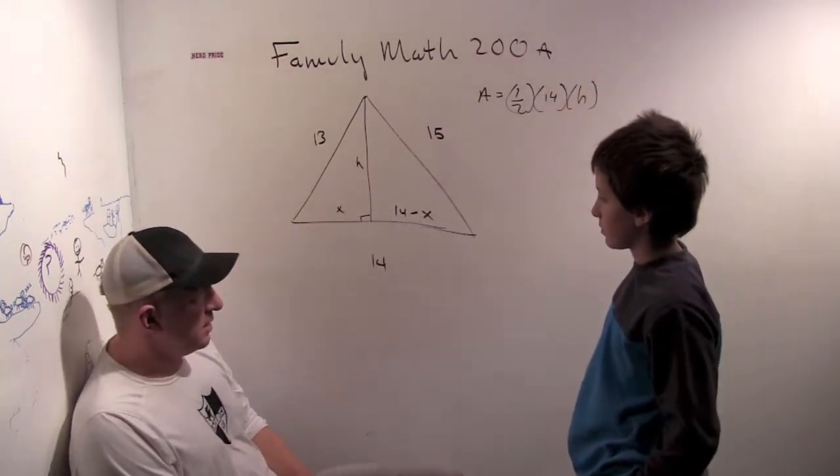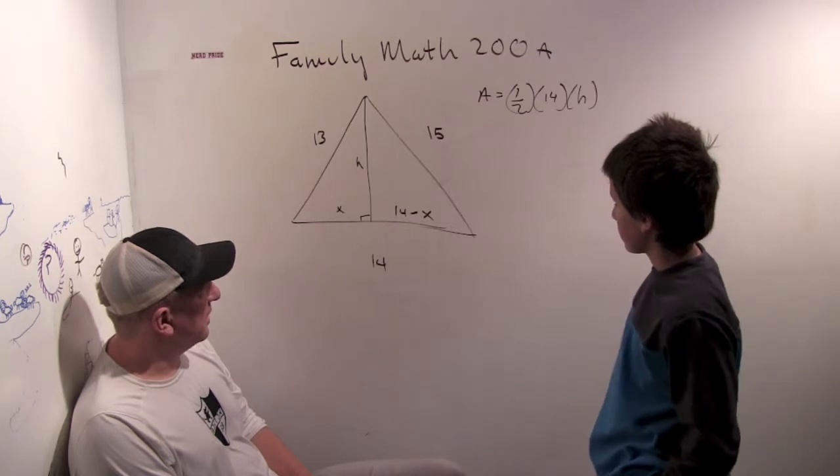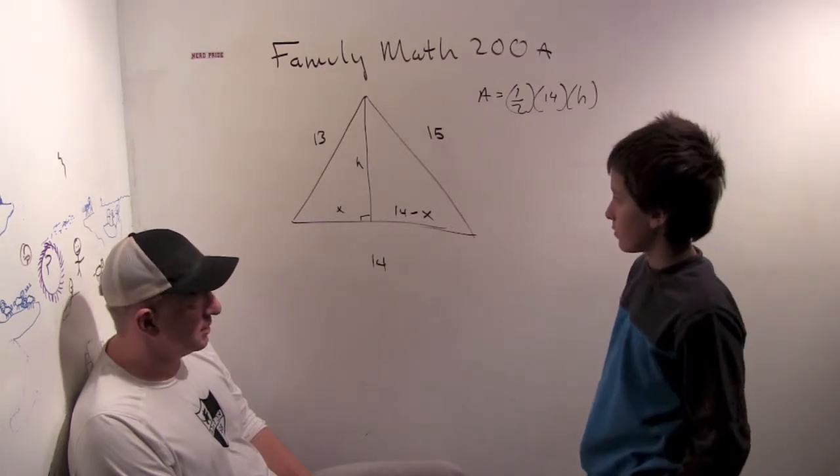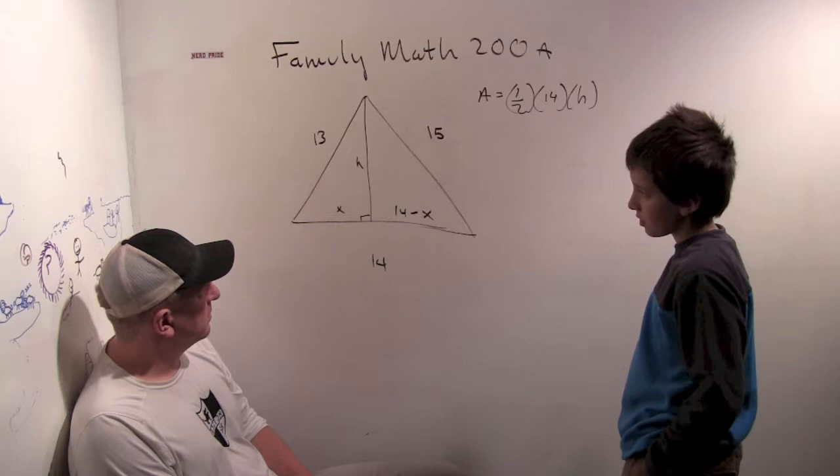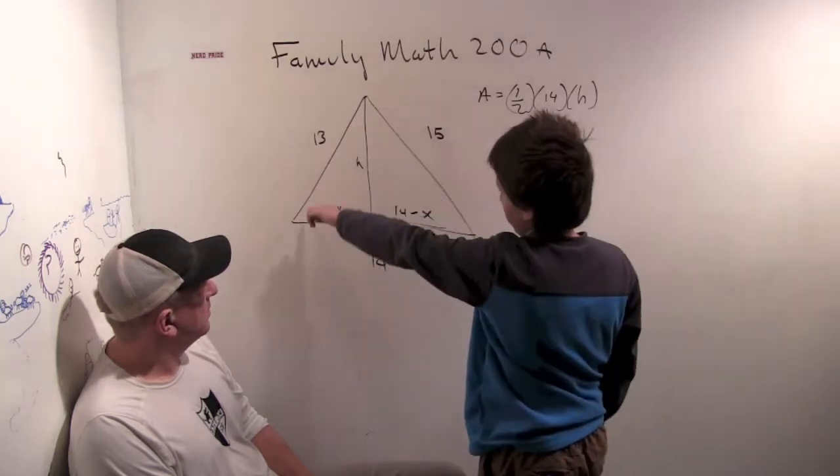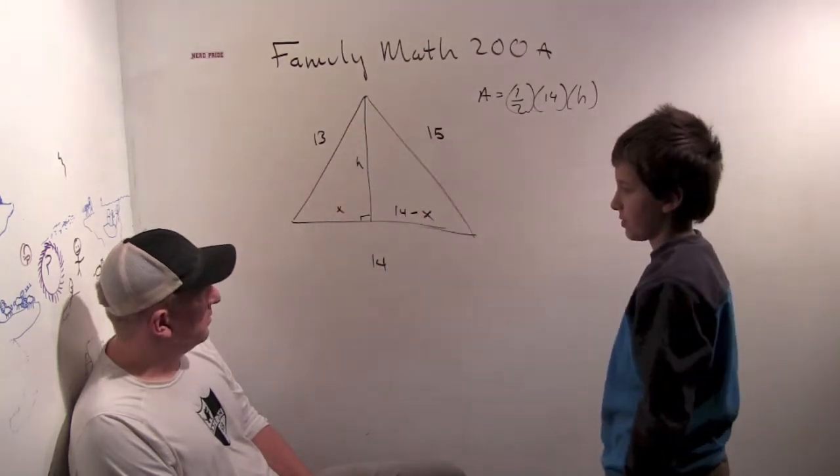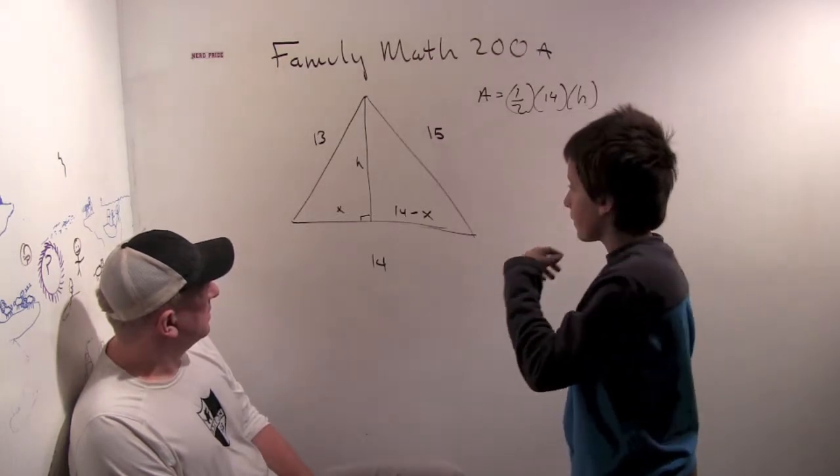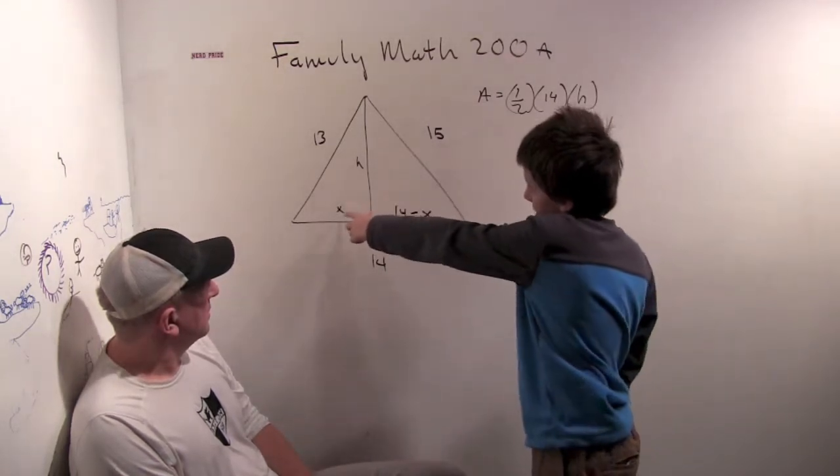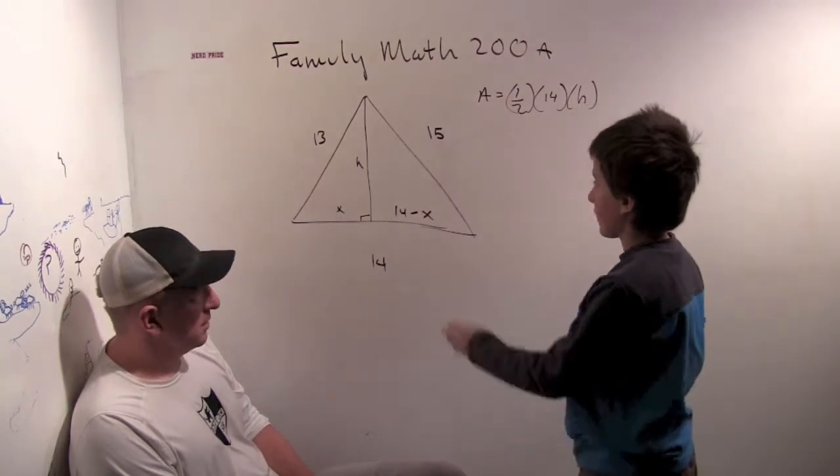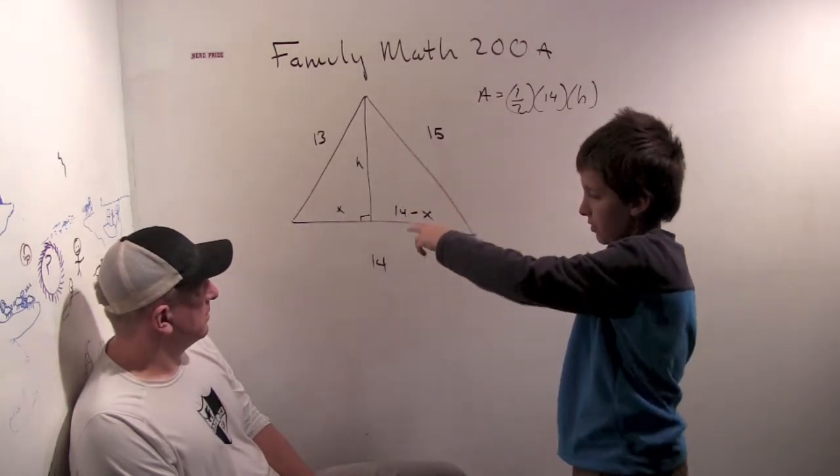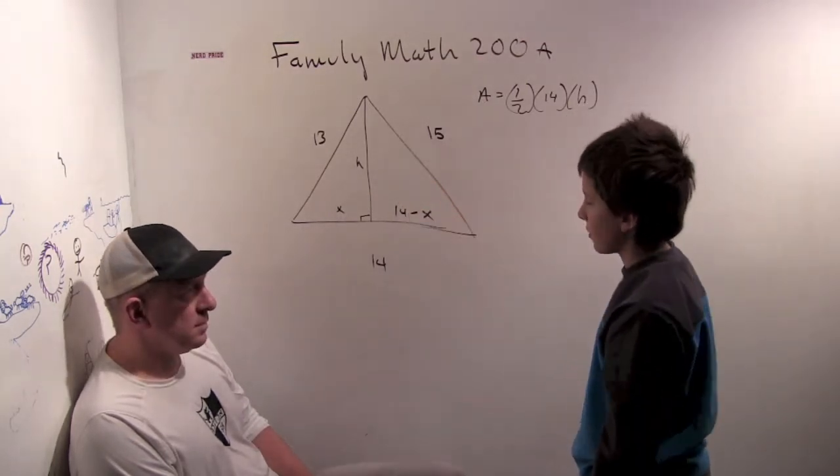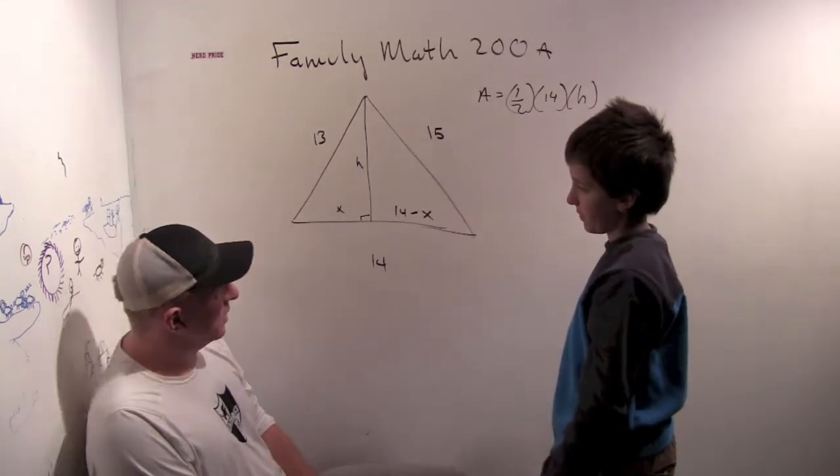So what is one equation that you can see that's going to relate x and h here? What about this other triangle with the 13 as the hypotenuse? What equation are you going to get from that? We have x squared plus h squared is 13 squared.